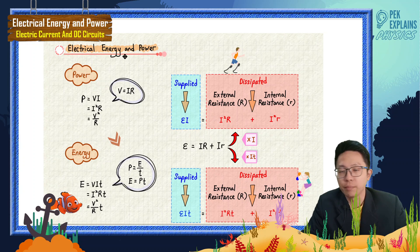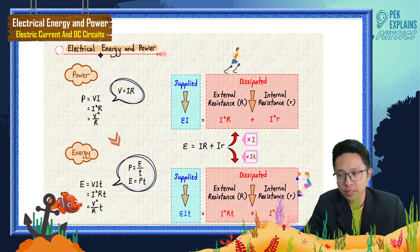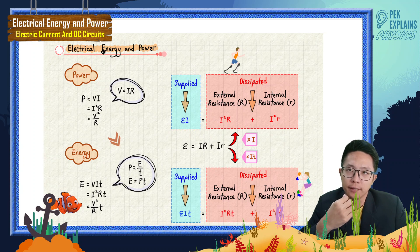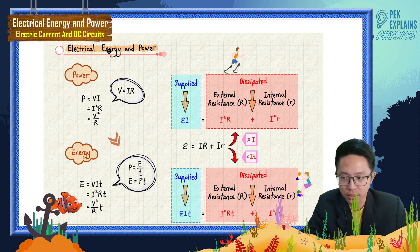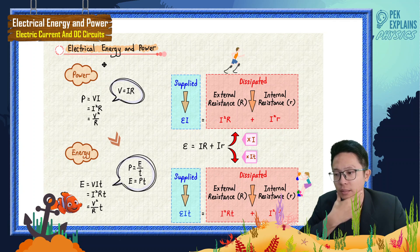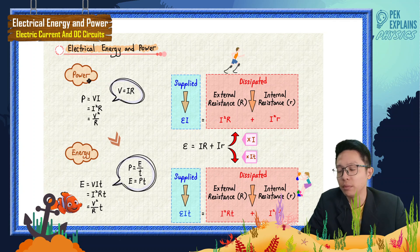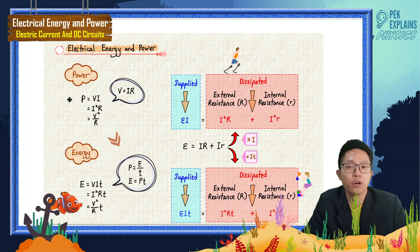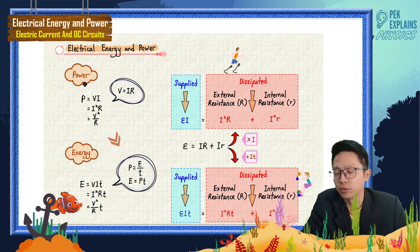Electrical energy and power — we know that batteries supply energy but resistors use up the energy. That's why we need to learn about energy and power. First of all, during high school you already learned how to calculate power, so let us refresh the formulas. To calculate power we use voltage times current: P = VI.